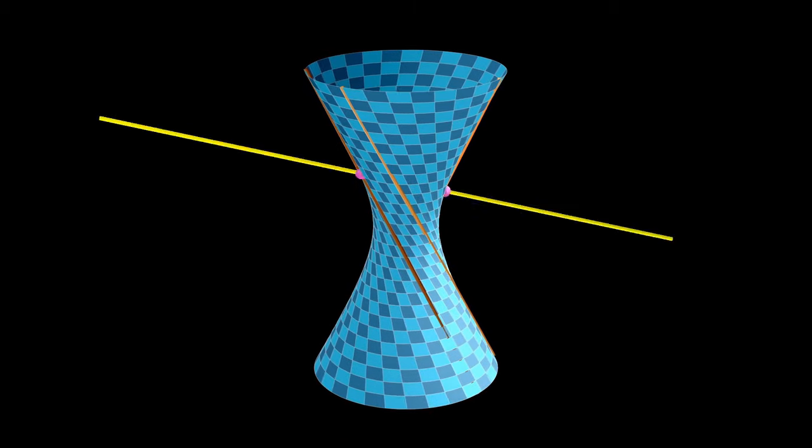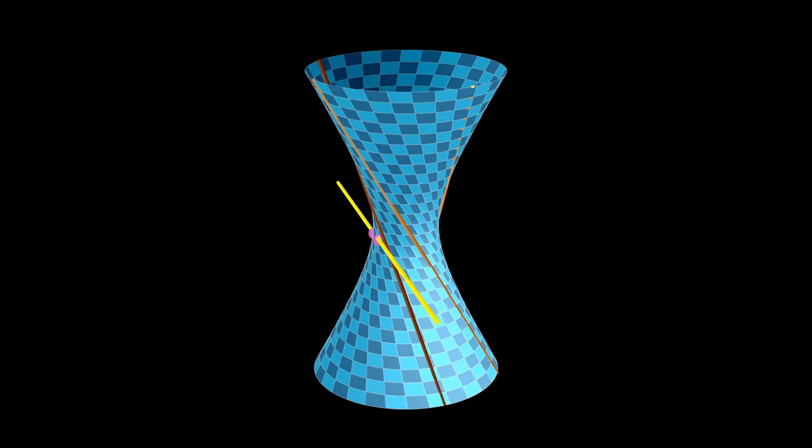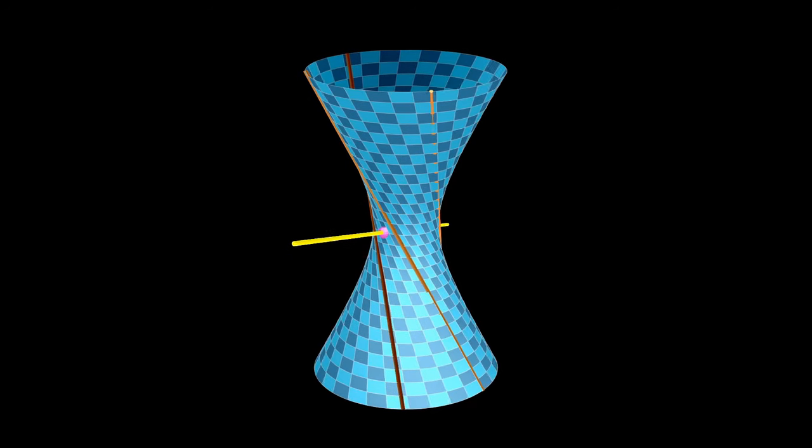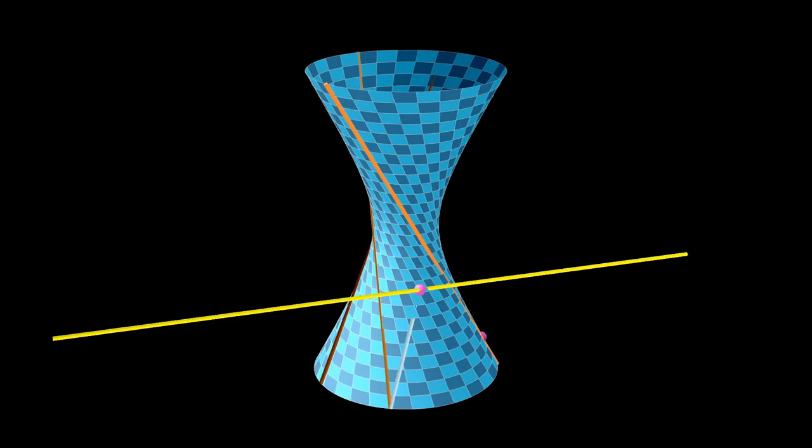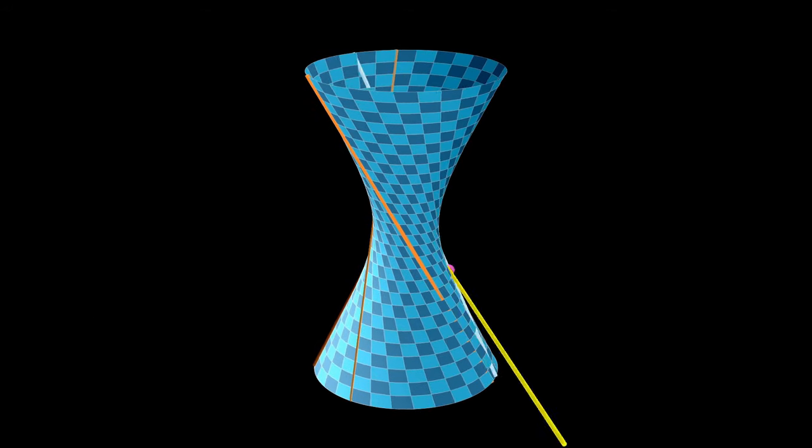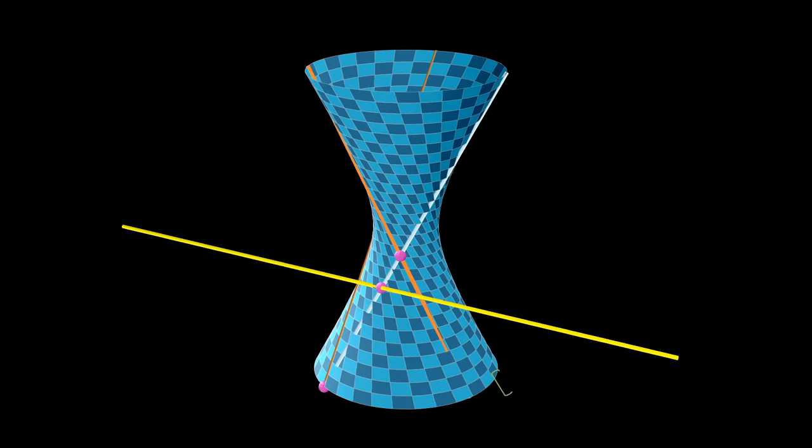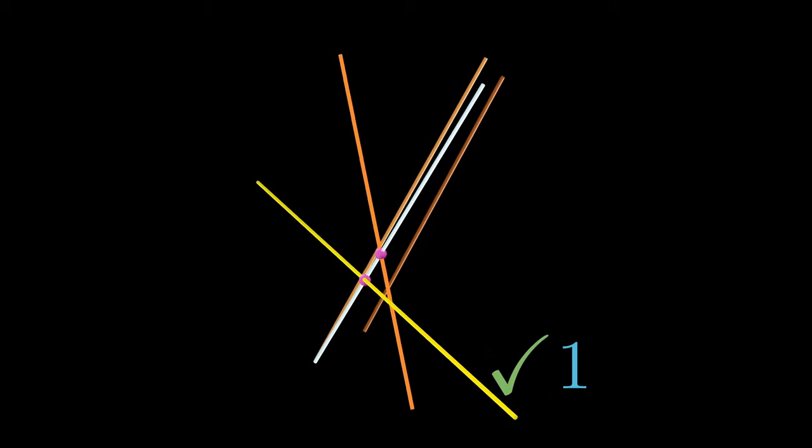If the fourth line intersects the hyperboloid at exactly one point, then there is exactly one line that goes through all four given lines. And it is given by the line from the opposite ruling on the hyperboloid that goes through the point that the fourth line intersects the hyperboloid at.